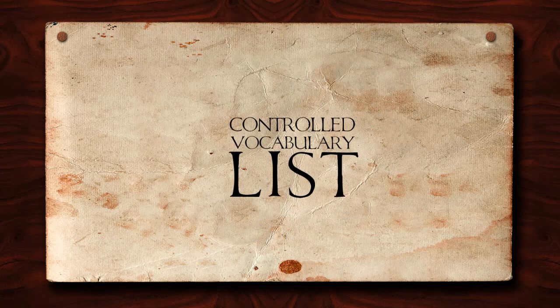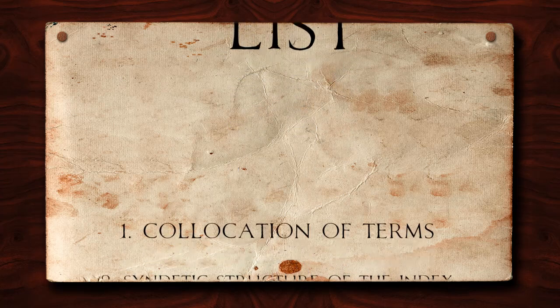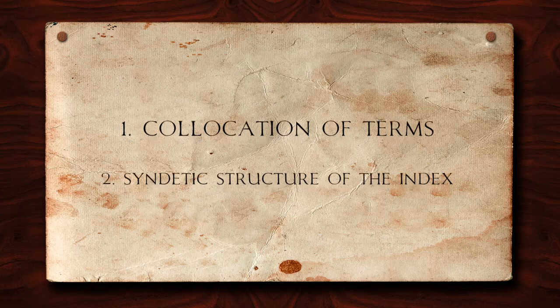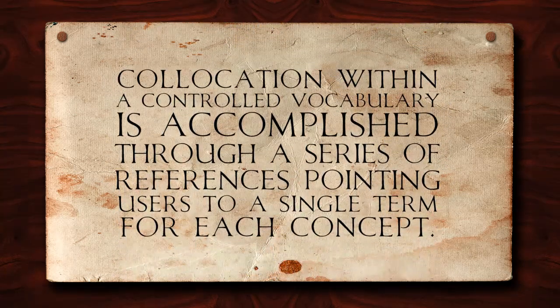Once you have determined what the material is about, the second step is to translate that idea into a controlled vocabulary list, such as the Library of Congress subject headings. There are two main ways in which using controlled vocabularies improve the speed and precision of searching: through collocation of terms and the syndetic structure of the index. Collocation within a controlled vocabulary is accomplished through a series of references, pointing users to a single term for each concept.